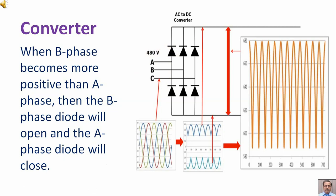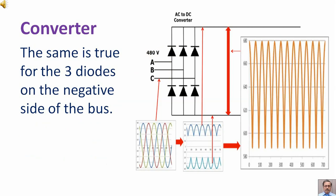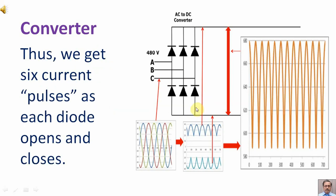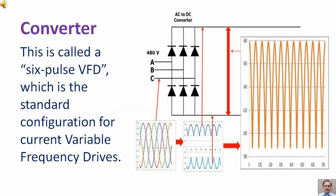When B phase becomes more positive than A phase, then the B phase diode will open and the A phase diode will close. The same is true for the three diodes on the negative side of the bus. Thus we get six current pulses as each diode opens and closes. This is called a six pulse VFD, which is the standard configuration for current variable frequency drives.